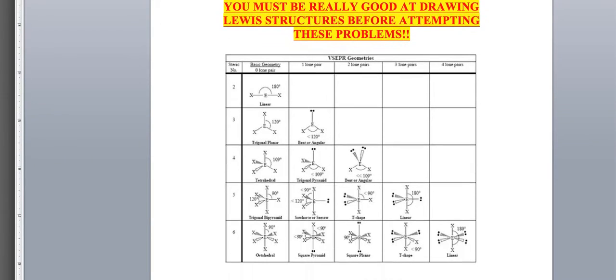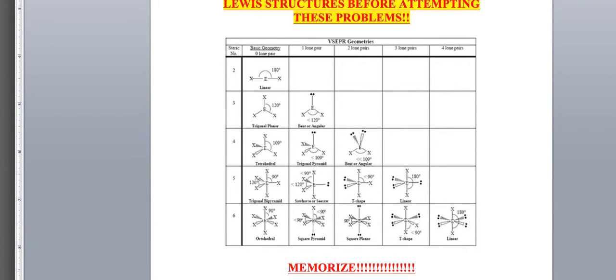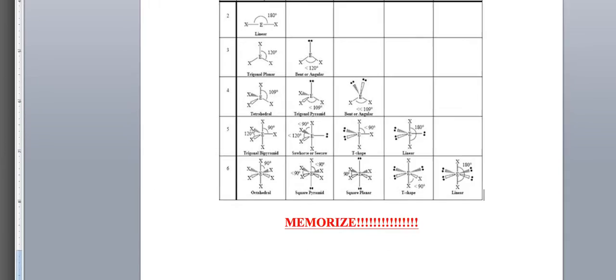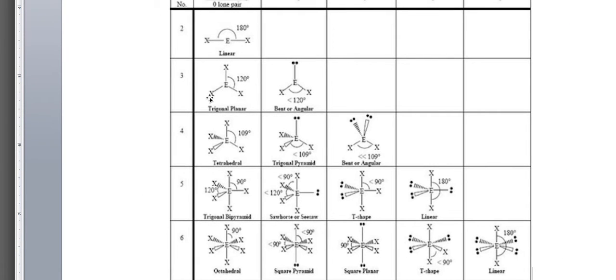You need a firm grasp on Lewis structures prior to understanding these VSEPR geometries. Here we have the actual table that shows us E being the central element, X will be the peripheral elements, and the bond angles.